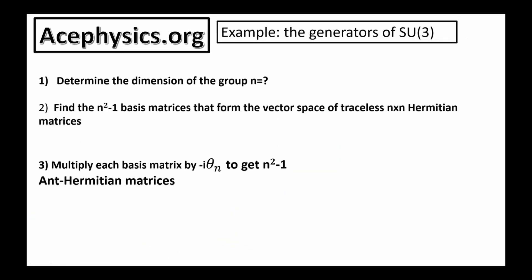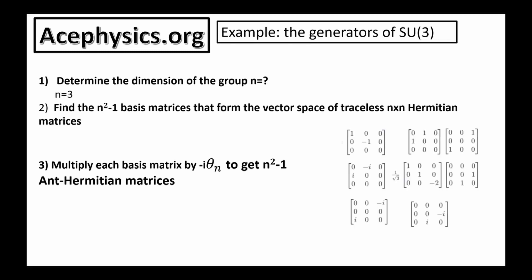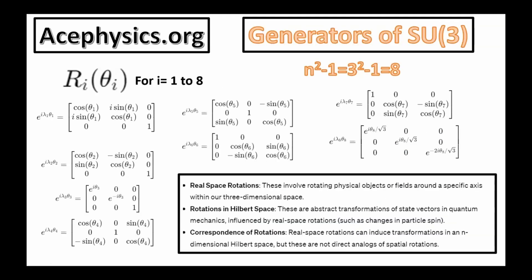For the final example, I'll show how to get the generators of the group SU3, the special unitary group in three dimensions. First, determine n equals 3. Next, find the basis matrices — there are eight of them. Then multiply them by −i·theta, and finally exponentiate all eight basis matrices. That gives you the eight generators of the group SU3.